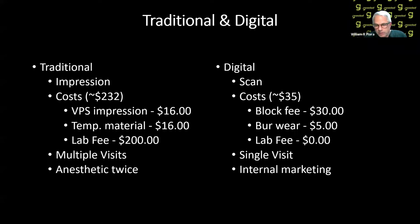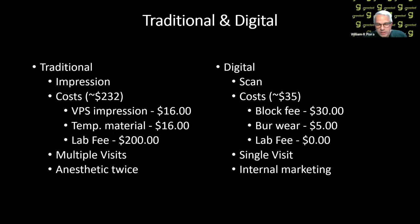Cost-wise: VPS is about $16 to take an impression, temporary material is $16, and lab fee average is $200. In our world, a block fee is $30, the bur wear when you figure it out is about $5 to mill, and lab fee — we don't have any. With traditional there are multiple visits, which includes a temporary. Temporaries come off, patients don't like them, they have to get numb twice. When you do it all the same day, they get numb once. It's also a great internal marketing tool because patients love to see you design their crown on the TV. Our computers are hooked to our TVs so we can show the patient how we designed it — the scans, how it fits, the different colors, how the teeth fit together. A lot of them will ask to go see the mills. They'll watch it, they're fascinated. They tell their friends: 'I went in, got it done, hour and 45 minutes to two hours, I was done, went home, fit perfect, I didn't have anything come off and I didn't have to go back.'